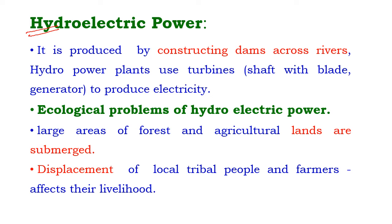Hydroelectric power. Hydroelectric power is produced by constructing dams across rivers. Hydroelectric power plants use turbines to produce electricity. The turbines have a shaft fitted with blades attached to a generator. When a large amount of water forcibly hits the blade, the blade rotates the generator to produce electricity.